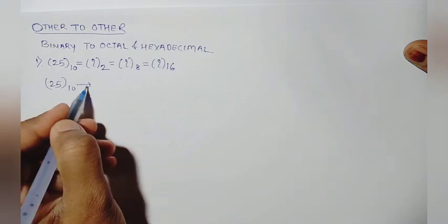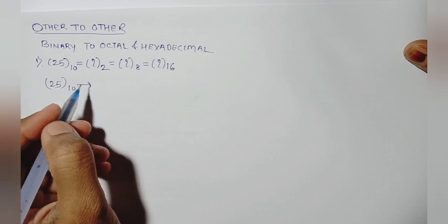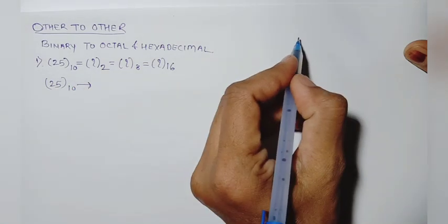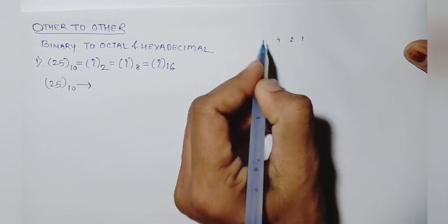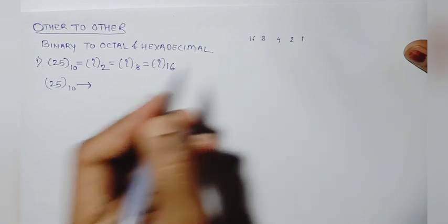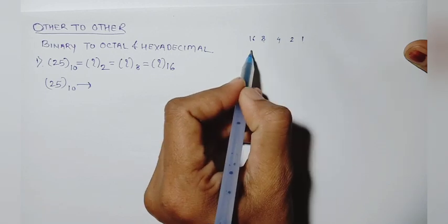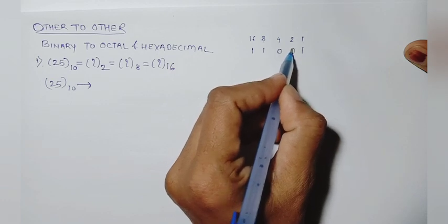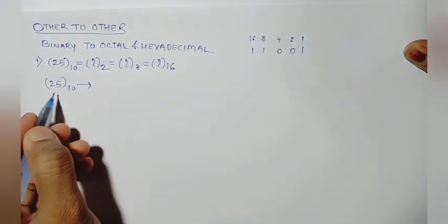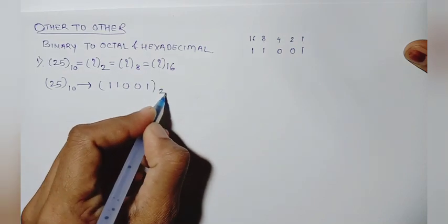We will use the 1-2-4-8 system to generate a binary number. Using this rule: 1, 2, 4, 8, 16. Sixteen plus eight equals twenty-four, and twenty-four plus one equals twenty-five. So 25 can be written as 1-1-0-0-1 in binary.